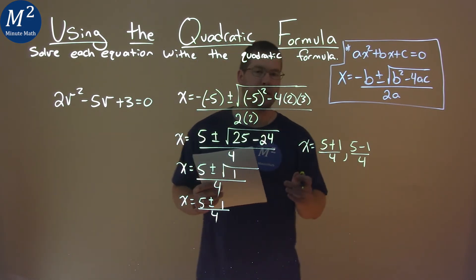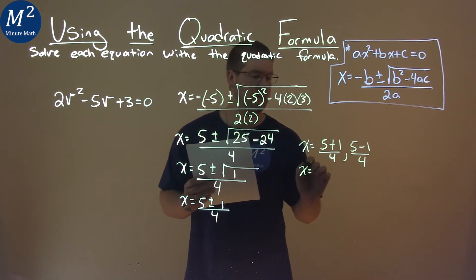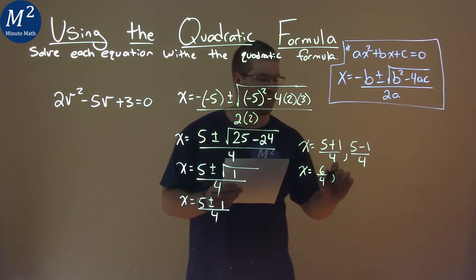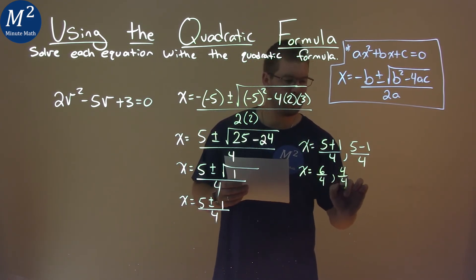So we're going to solve each one individually. x equals, well, 5 plus 1 is 6 over 4, and 5 minus 1 is 4 over 4.